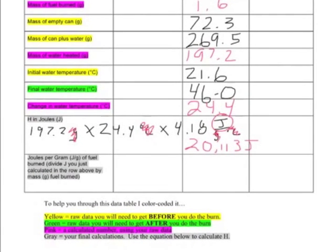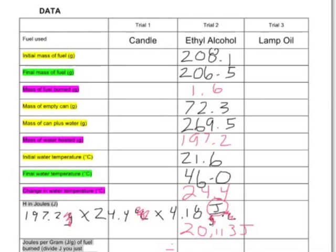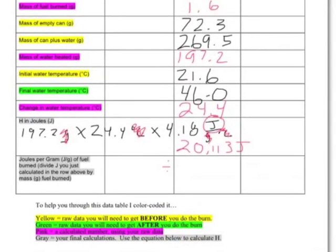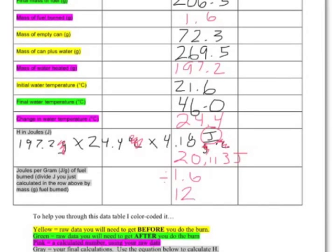Now I want to find out how many joules per gram of fuel I burned. All I have to do is take 20,113 and divide it by the amount of fuel burned, which in this case was 1.6 grams. So 20,113 divided by 1.6 gives me 12,570 joules per gram. These numbers make sense — 20,000 joules total and 12,000 joules per gram is consistent with what I've seen in the past.